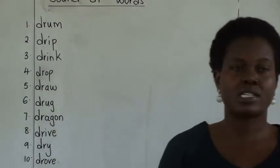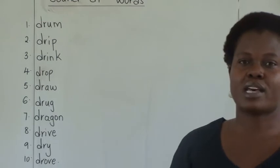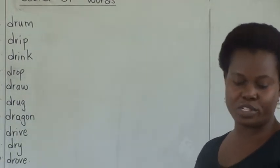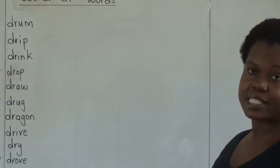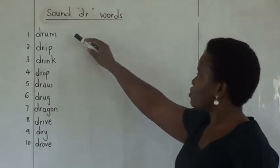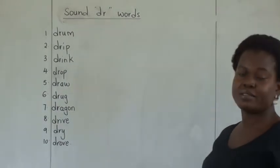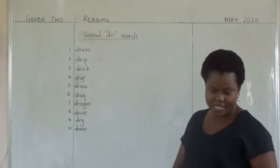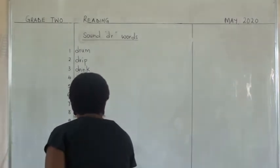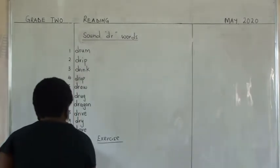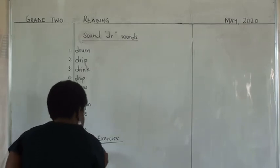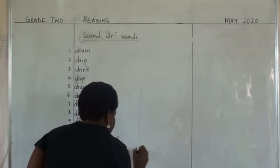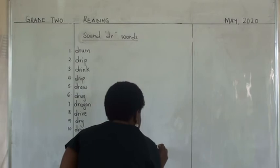Now, these words can also be used in sentences. In the past lessons I was writing sentences for you using the previous sounds that we learned. But today I want you to write the sentences. So I am going to give you an assignment of writing sentences using 'dr' words. I would like you to pick five words that you like from these ten words that we have written, and then make sentences using the five words that you have picked. The exercise is that you are going to write five sentences using 'dr' words.